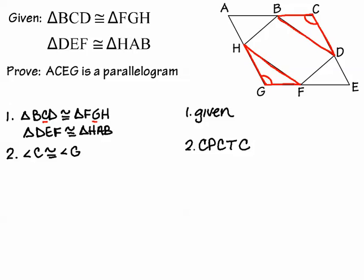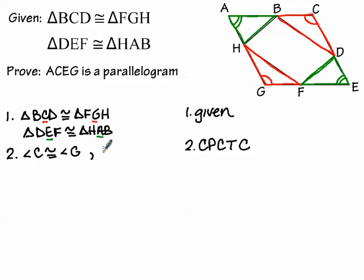Now let's look at the second pair of congruent triangles: triangle DEF congruent to triangle HAB. There again, the green triangles and the larger quadrilateral don't share any full side lengths, so we use angles. Angle A in triangle HAB corresponds to angle E in triangle DEF — they're both the middle letter in each triangle name. By CPCTC, angle A is congruent to angle E.